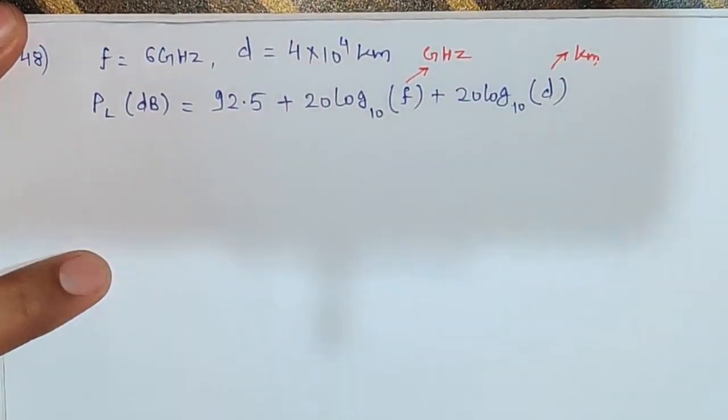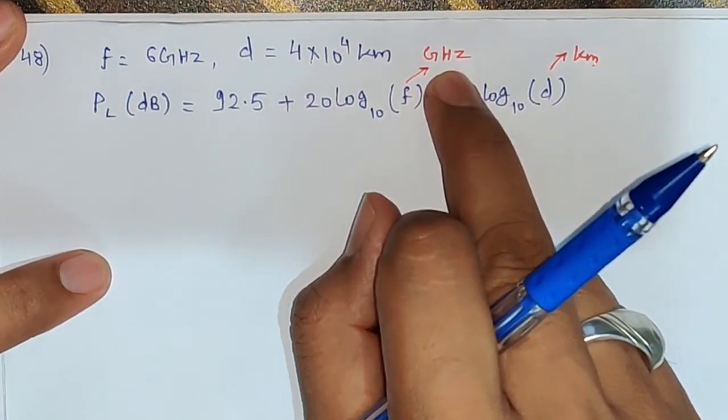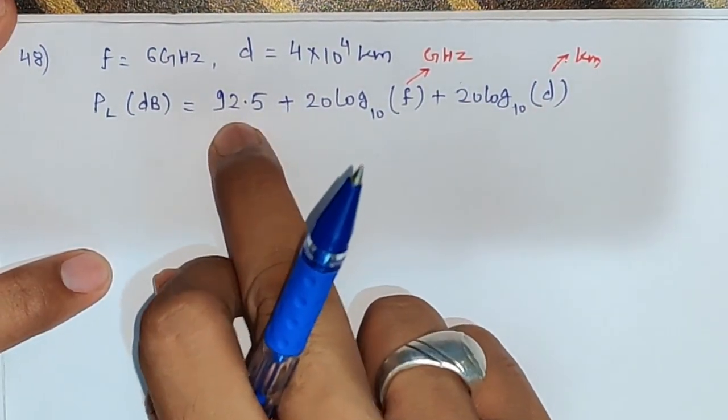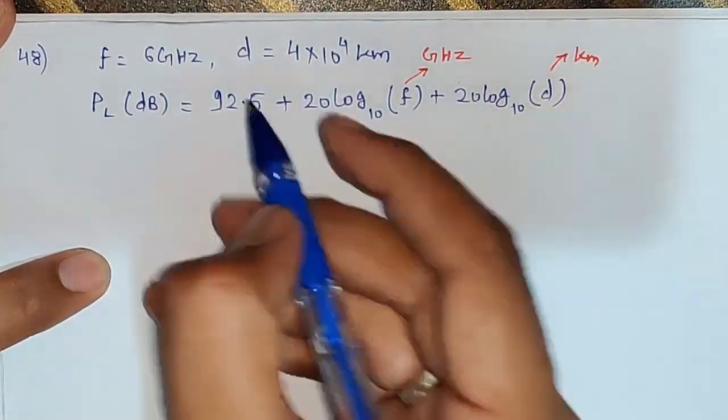If the frequency is in megahertz and distance in meters, then the formula is 32.5 dB. Now simply put the values and you will find the answer.